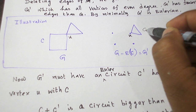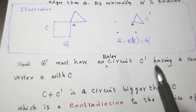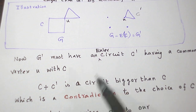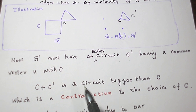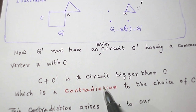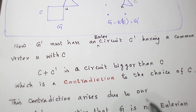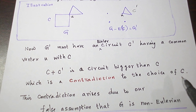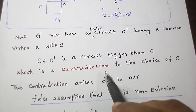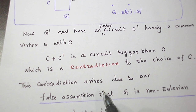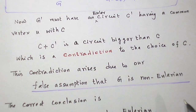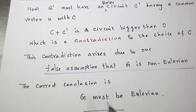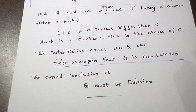This is circuit C' in the illustration. Now both circuits C and C' have a common vertex U. Since G is originally connected, combining C and C' — that is, C plus C' concatenated — we will get a circuit that is bigger than C. This is a contradiction to our choice of C as the largest circuit in the graph. So this contradiction arises due to our false assumption that G is non-Eulerian. Therefore, G must be Eulerian. With this, the proof is complete.